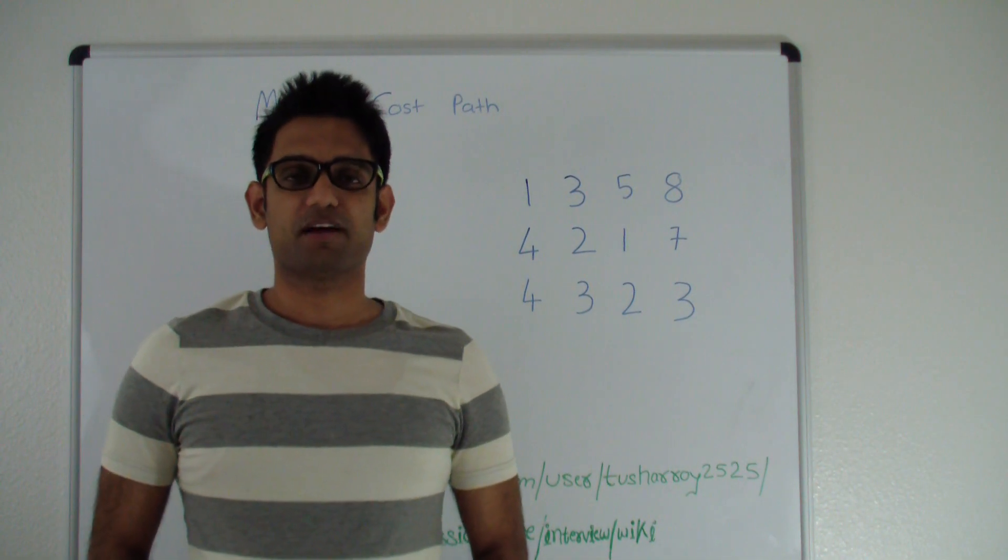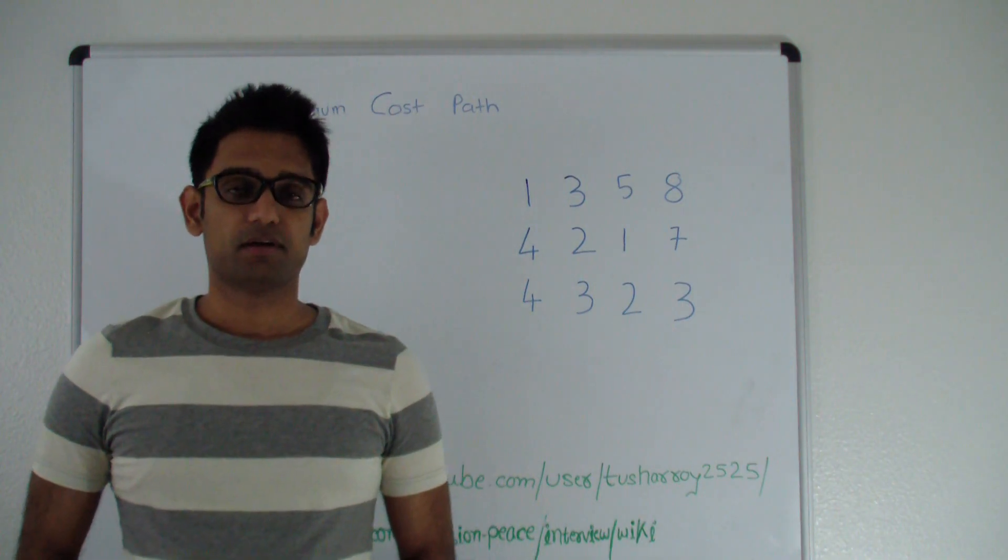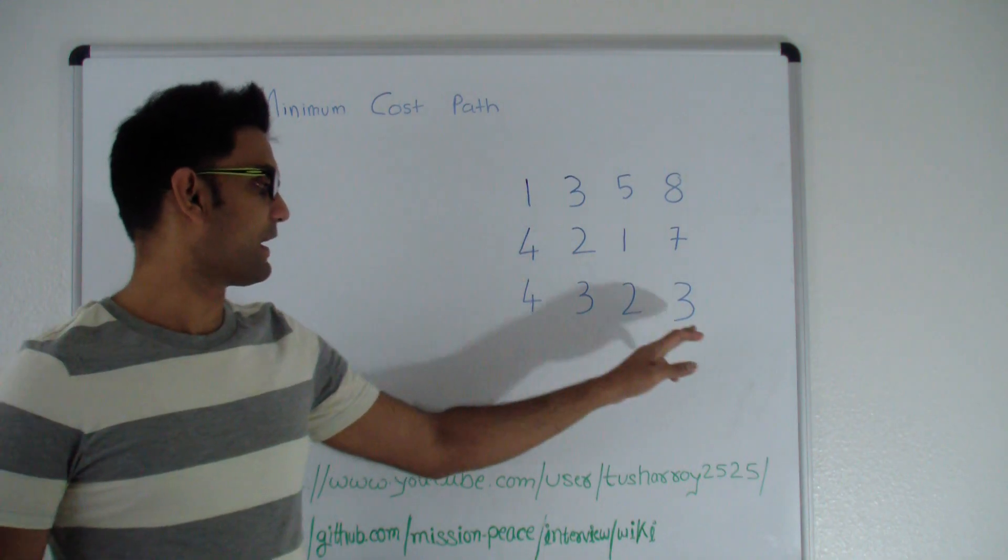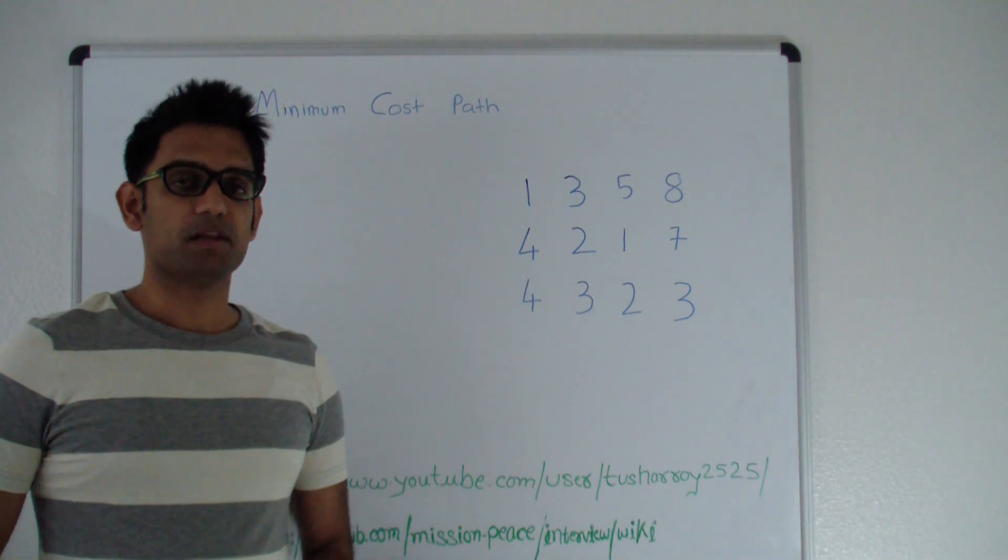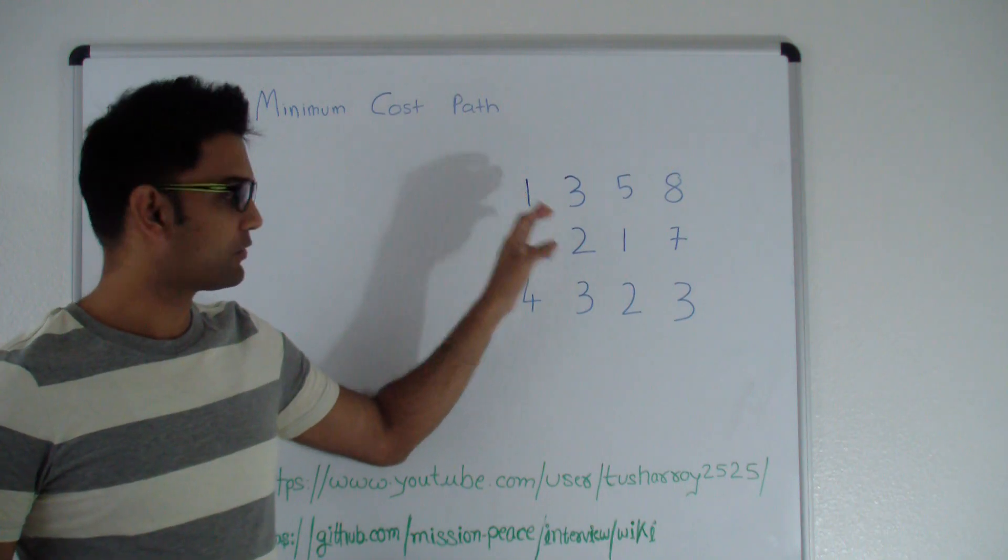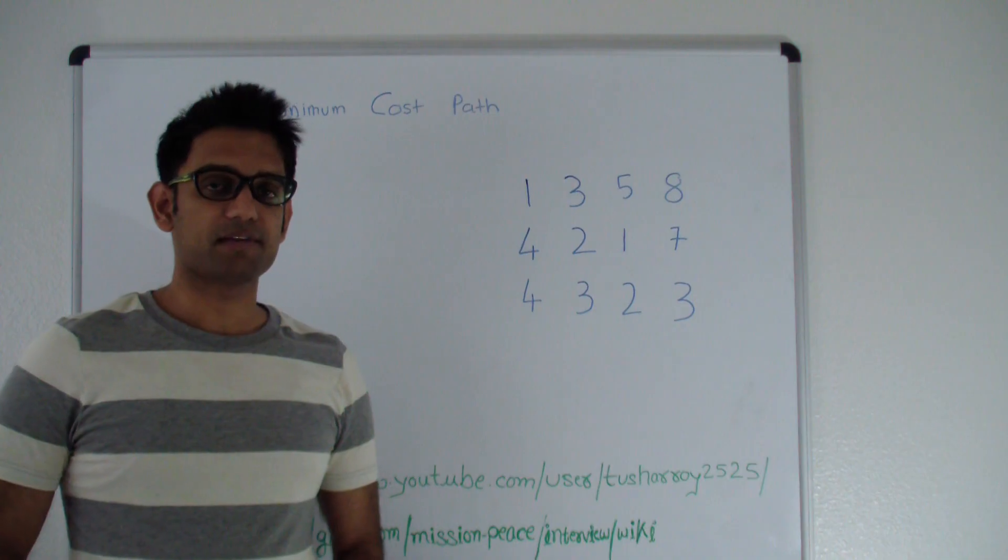Hello friends, my name is Tushar and today we are going to look at the minimum cost path problem. The question is: given a matrix and a start point and end point, what is the minimum cost to reach from top left corner to the bottom right corner? The thing is you can only move right and down.